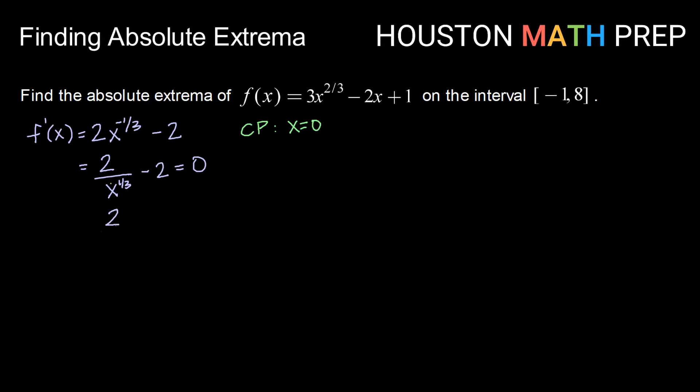Now, let's see if I can find any more by solving. So first thing, I'm going to add this 2 over. So 2 over x to the one-third power equals 2, and I'm going to think of that as 2 over 1. Then multiplying by that x to the one-third to get it out of the denominator, I have 2 equals 2x to the one-third, dividing by 2, I get 1 equals x to the one-third, and then to undo the one-third power, I can cube both sides. 1 to the third is still 1, and so I get x equals 1. So it looks like I have two critical points. One where x equals 0, and the other where x equals 1.